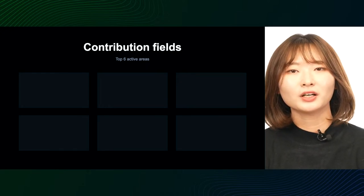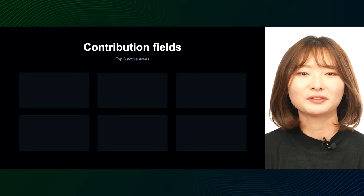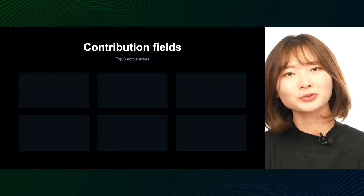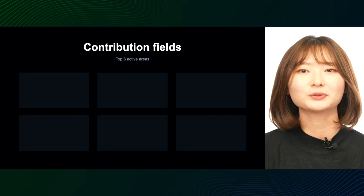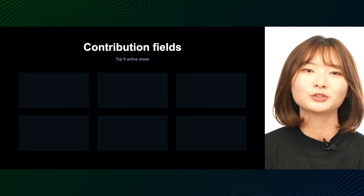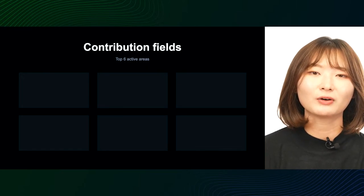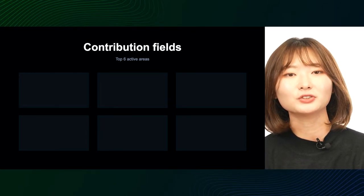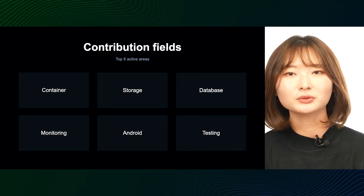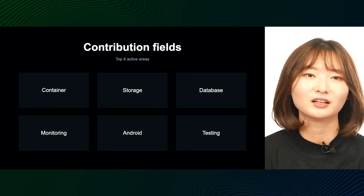When preparing for this session, I tried to create a top six list of open sources contributed by LINE developers over the past year, but the range of activities was much wider than expected and I couldn't narrow it down. So in the end, I grouped them into fields. Since LINE is a place that handles large-scale traffic, it was found that open sources in containers, storage, database, and monitoring were used a lot and contributed to a lot. Following that, contributions were also actively made to Android development and testing libraries.